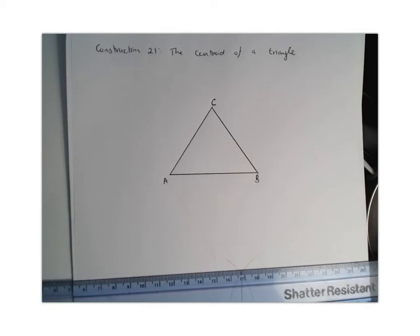For Construction 21, we're going to construct the centroid of a triangle. The first thing you need to know is that the centroid of a triangle is basically its balance point, or its center of gravity, and it's where the three medians meet. So we basically need to figure out where the medians are, and then where they intersect is going to be our centroid point.